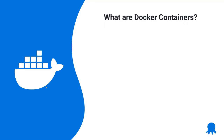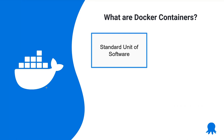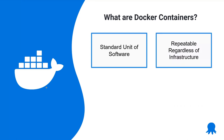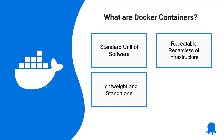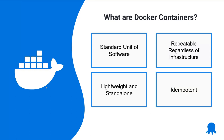ECS is predicated on Docker containers, so it's good to go through what they are. Docker containers are a standard unit of software where we wrap up the code and the infrastructure together. That means it's repeatable regardless of where we deploy it - whatever infrastructure we put it on, we get the same result every time. They're lightweight and standalone, only containing what they need, so we can stand them up and tear them down at will. That helps us with scaling and gives us the idempotency we need.